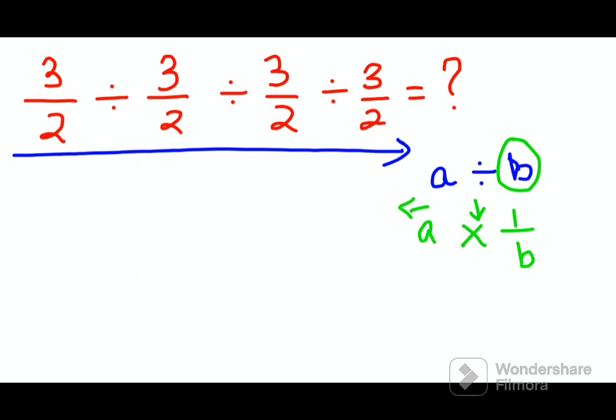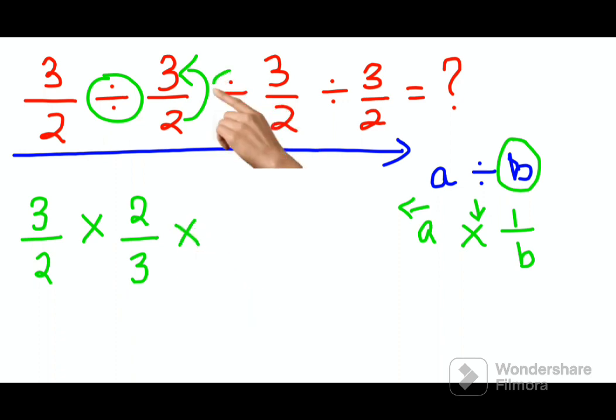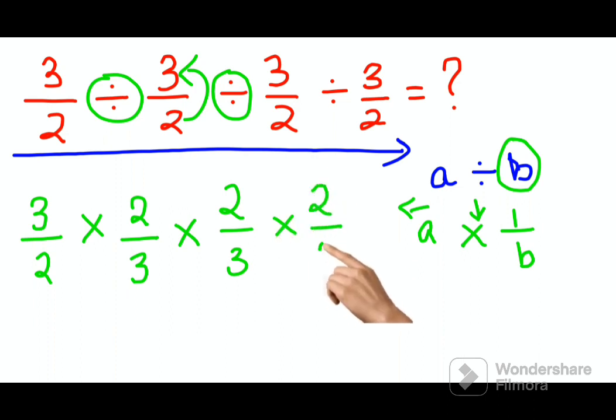Using the same logic over here what we will get is, we will write the 3 upon 2 as it is. Then the moment I change this division sign into multiplication this gets reversed or you get the reciprocal. So you get 2 upon 3. Similarly this sign also changes and again here also you will get 2 upon 3. Similarly here also you will get 2 upon 3.